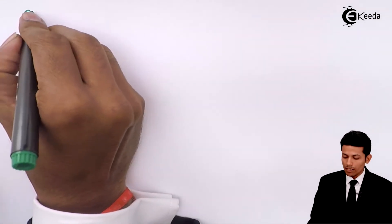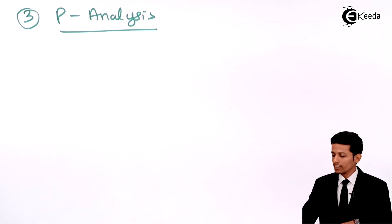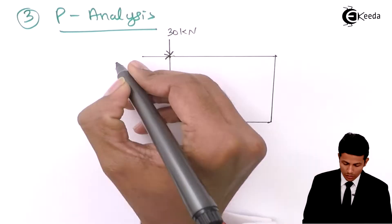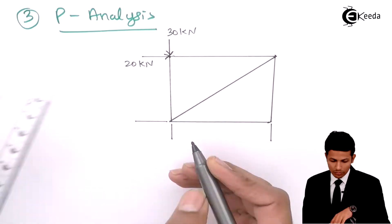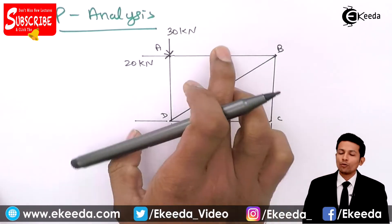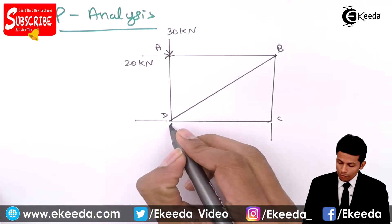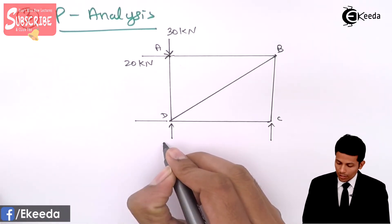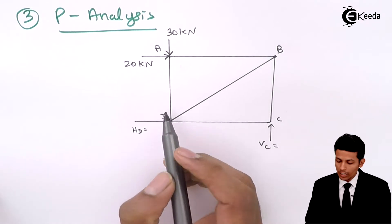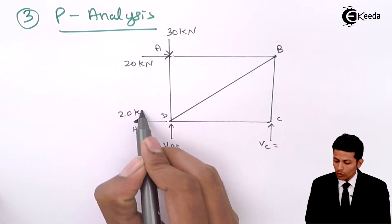Step three is the P-analysis. Draw the diagram with member AC removed. Now we have to find all the forces in members AB, BC, CD, DB, and AD using P-analysis. First, we find the reactions: VD, HD at D, and VC at C. Since there is only one horizontal load of 20 kN, HD equals 20 kN.